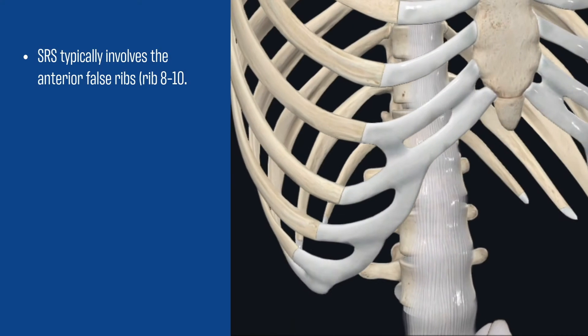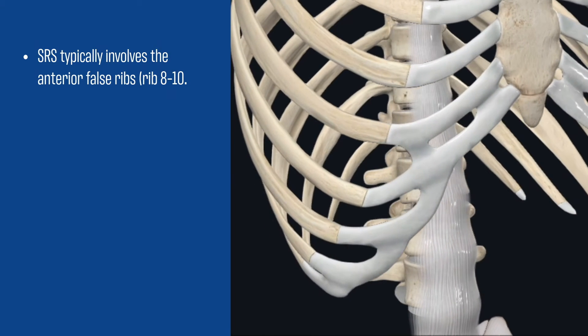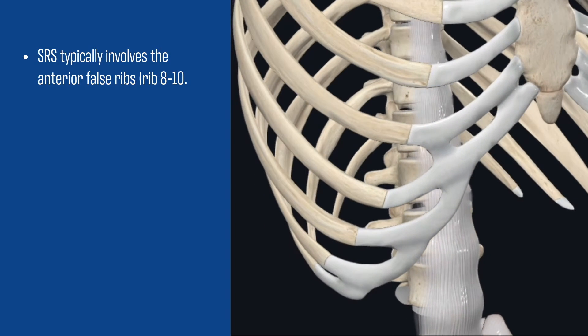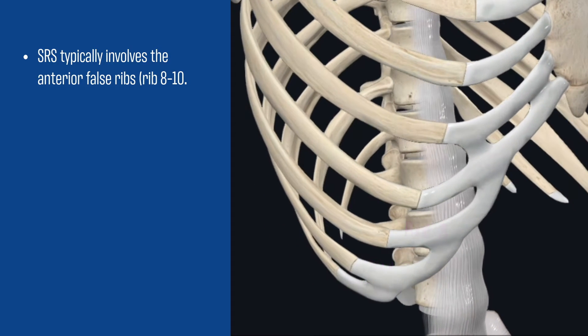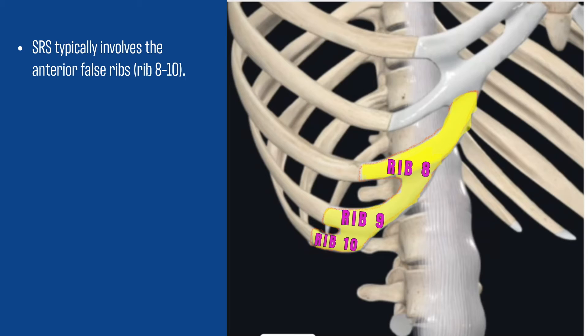Slipping rib syndrome usually targets the front part of the ribs, specifically the false ribs, which are usually ribs 8 to 10.